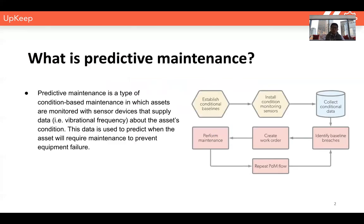Predictive maintenance is a type of condition-based maintenance in which your equipment and assets are monitored with sensor devices that supply data. This type of data could be temperature, vibration, or acoustic. All of this data is going to tell you what the condition of your piece of equipment is. You then put it into a machine learning algorithm to help you predict when that asset requires maintenance next. The whole premise behind predictive maintenance is to help you figure out when a piece of equipment is going to break down before it actually does.